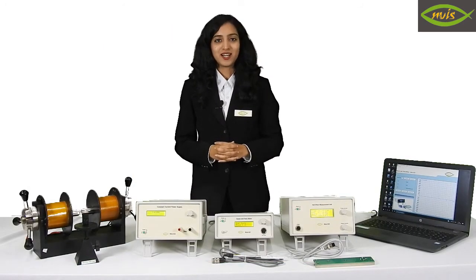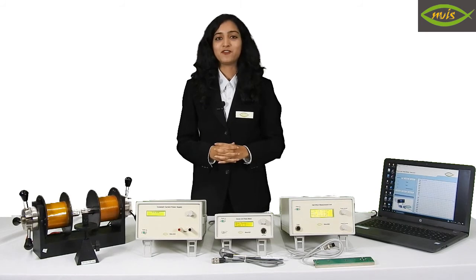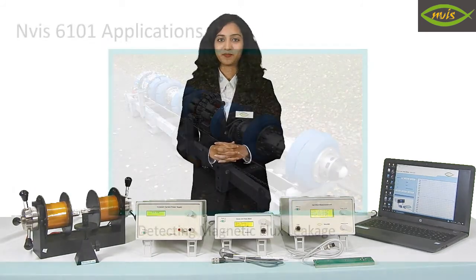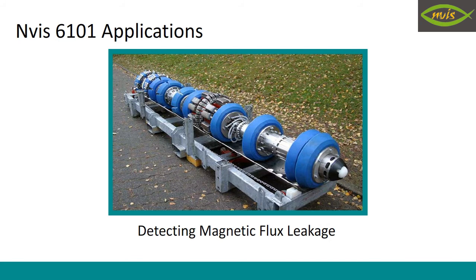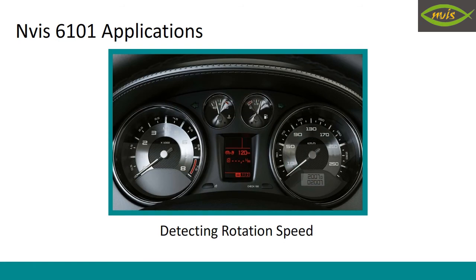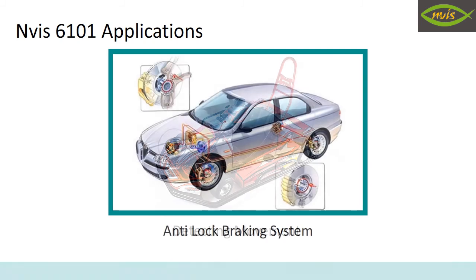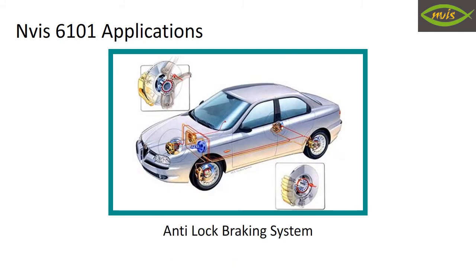Following are the applications of the Envis 6101 Hall Effect Setup: detecting magnetic flux leakage, detecting rotation speed, detecting movement, antilock braking, and many more.